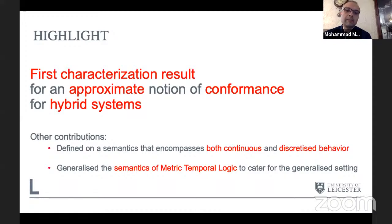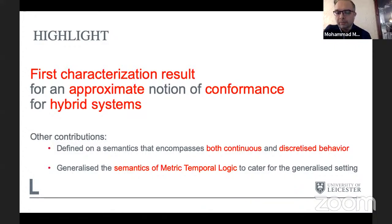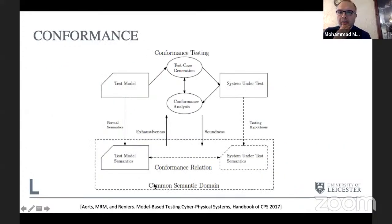To achieve this, they extended existing semantic notions to a new semantic notion that can capture both discretized and continuous systems — including systems with an uncountable number of states, necessary for continuous semantics. They also had to extend the semantics of metric temporal logic.